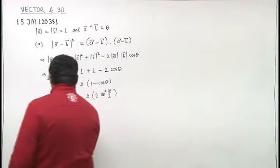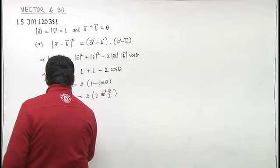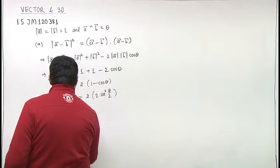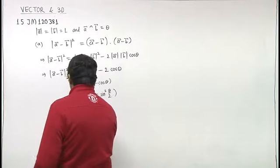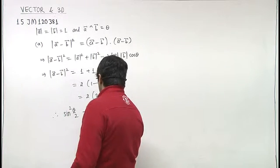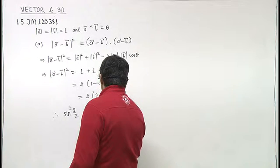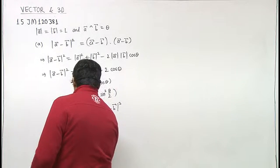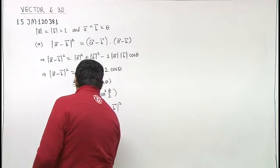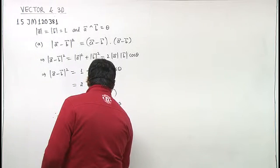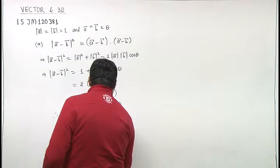That means sin squared theta by 2 will be one by four times mod of a minus b whole square. So taking the square root on both sides, sin theta by 2 is one by two times mod of a minus b.